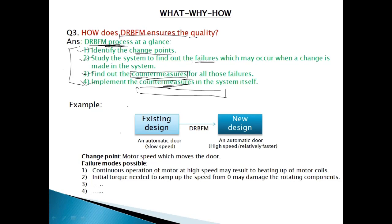Now let us look at our example again. The example of the automatic door in which the slow speed has to be modified to a relatively high speed. Now if we consider this as a system and a design change, then what is the change point? The change point is the motor speed which moves the door or slides the door. This is the change point for making it from a slow speed door to a high speed door. Now this was the first step to identify the change point.